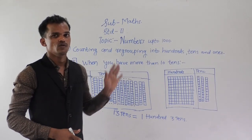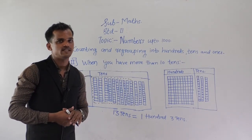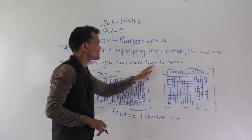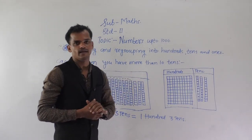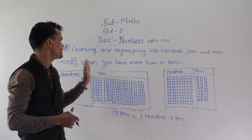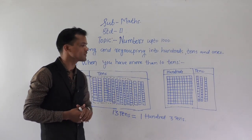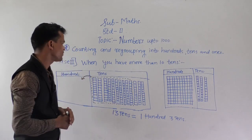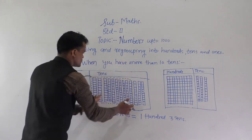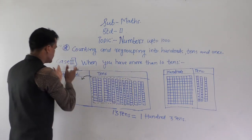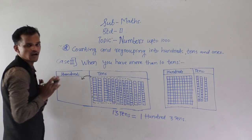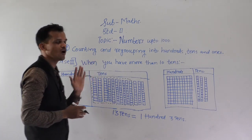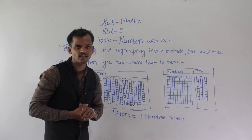Now we will study the second case, which is when you have more than 10 tens. The second case is that if you have more than 10 tens. See, this is the 10s column and this is the 100s column. First, count how many 10s are there.